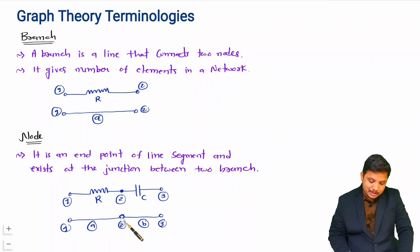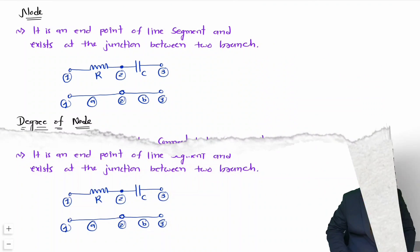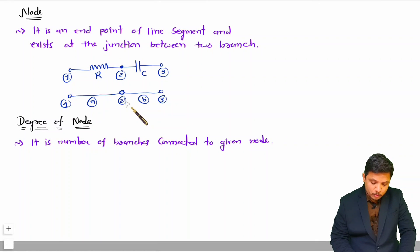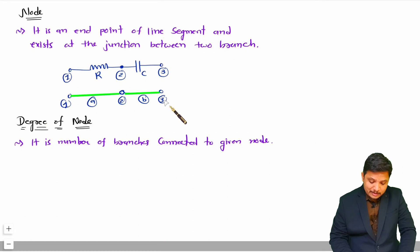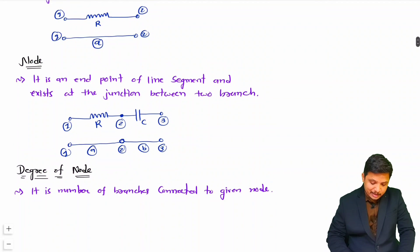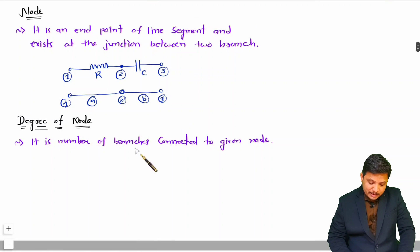The degree of a node is the number of branches connected to a given node. For example, branch A and branch B are both connected to node two, so the degree of node two is two. Only one branch is connected to node three, so the degree of node three is one. In a complex graph, you simply count how many branches are connected to a given node to find its degree.